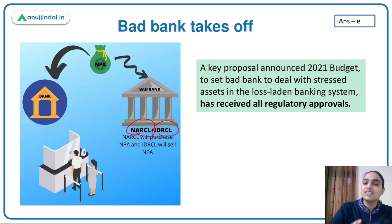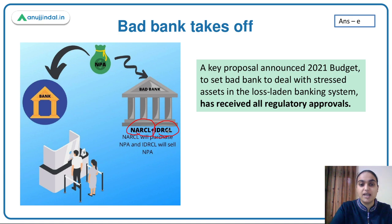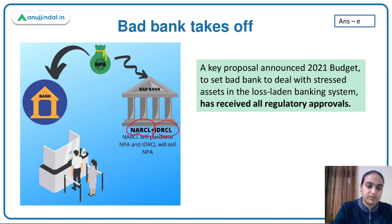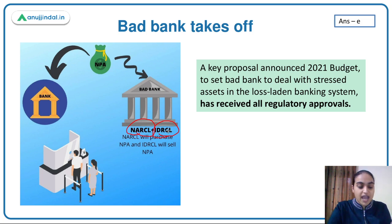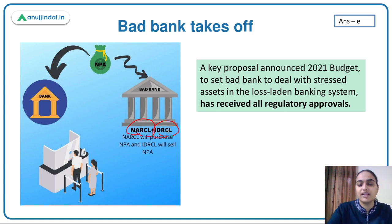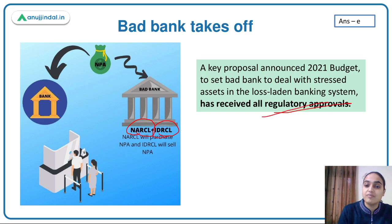There were problems because regulatory approvals were not being granted. The bad bank was not able to start its operations. The objective was to deal with the NPA problem and clean up banks' balance sheets. NARCL got the ARC license, but RBI was not satisfied with the dual structure of NARCL and IDRCL. Finally, all regulatory approvals have been granted and the bad bank will soon start operations.